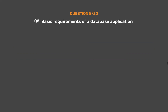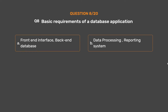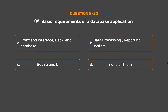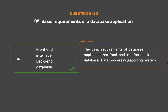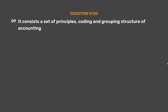Question number 8. Basic requirements of a database application: Option A: Front-end interface and back-end database. Option B: Data processing and reporting system. Option C: Both A and B. Option D: None of them. The correct answer is Option A — however, the full basic requirements of a database application are: front-end interface, back-end database, data processing, and reporting system. Question number 9. It consists a set of principles, coding and grouping structure of accounting. Option A: Operating procedure. Option B: Accounting framework. Option C: Front-end interface. Option D: Back-end database. The correct answer is Option B: Accounting framework, which consists a set of principles, coding and grouping structure of accounting.